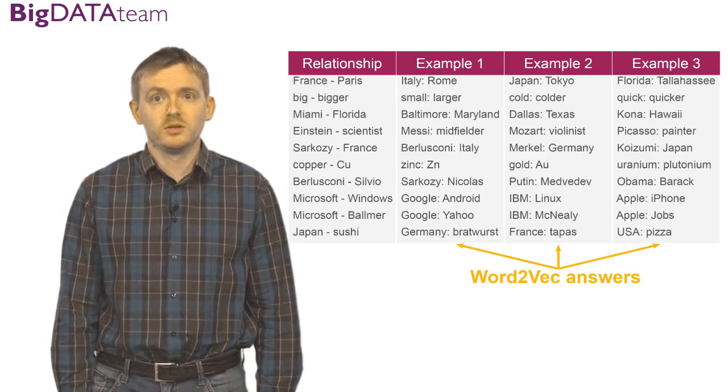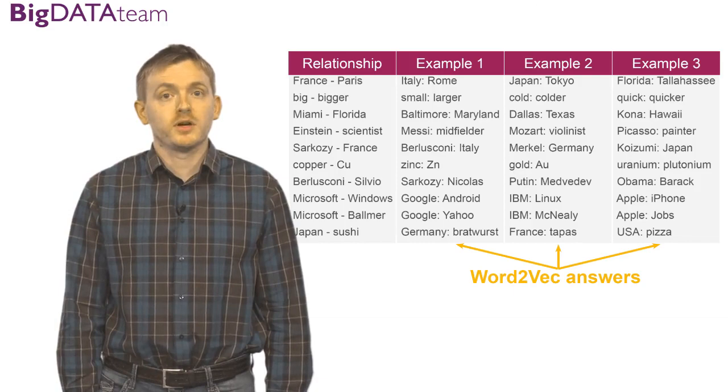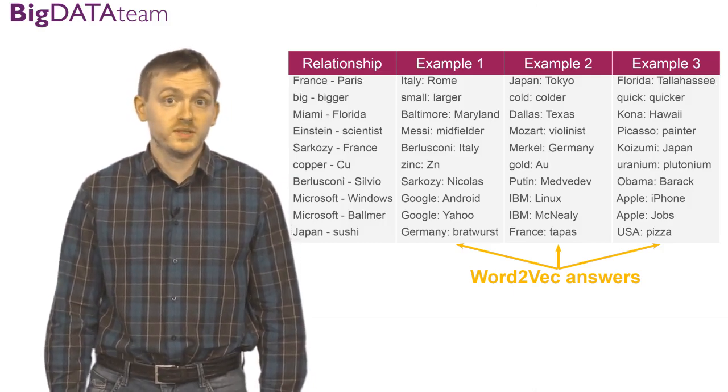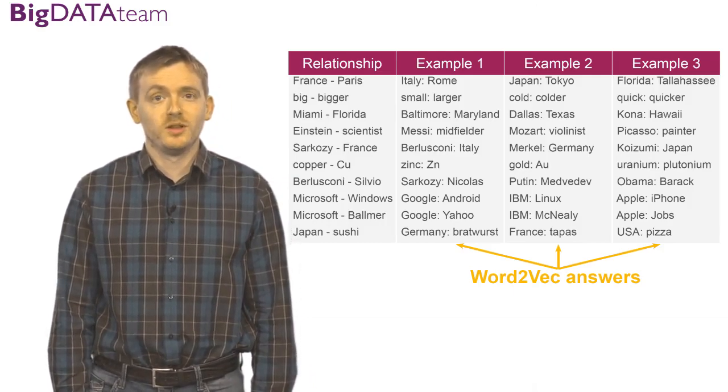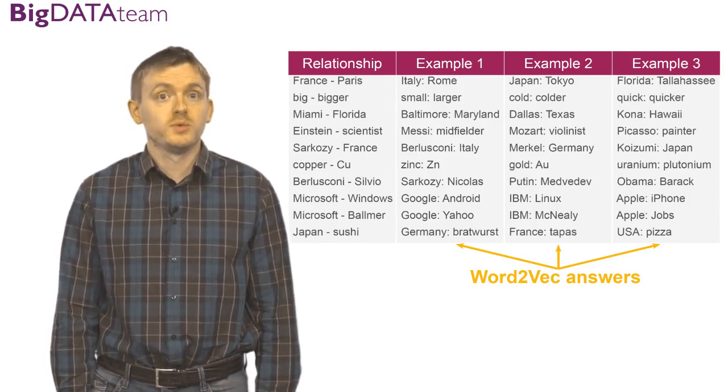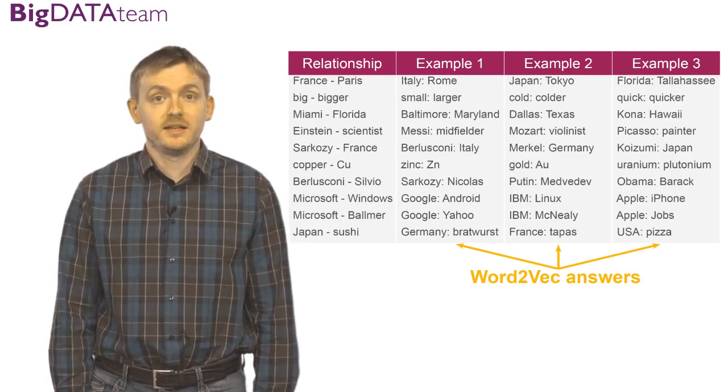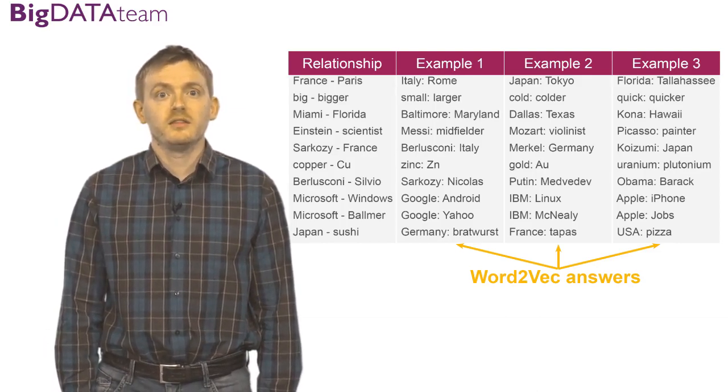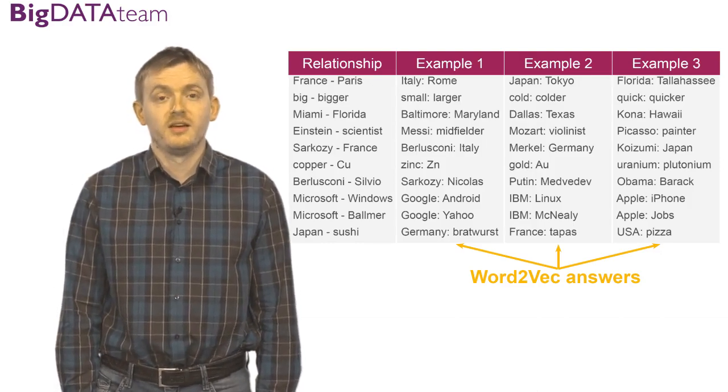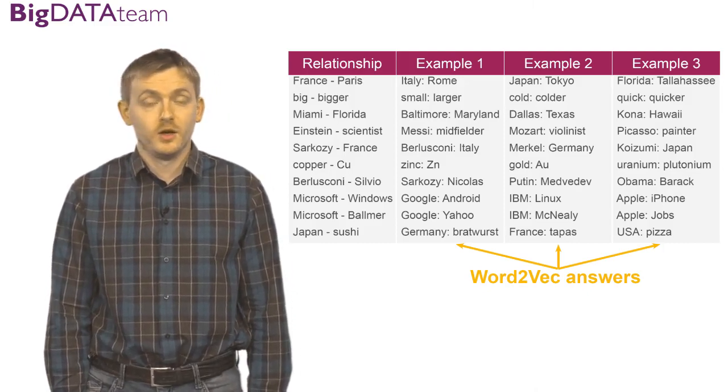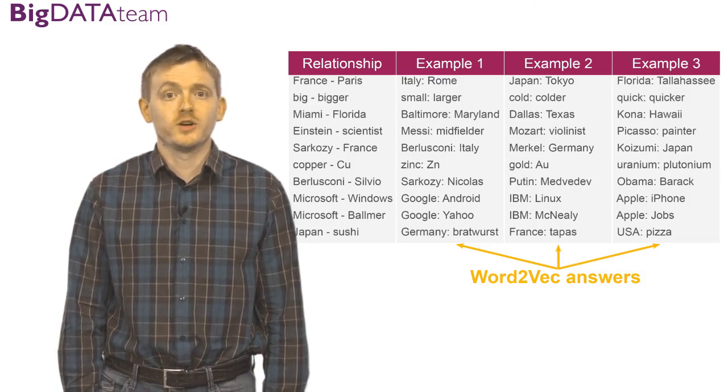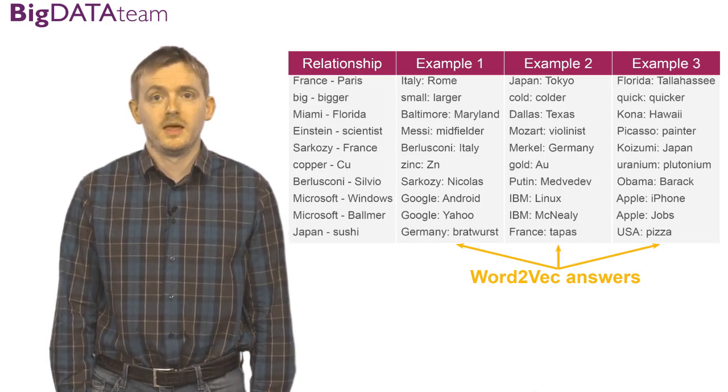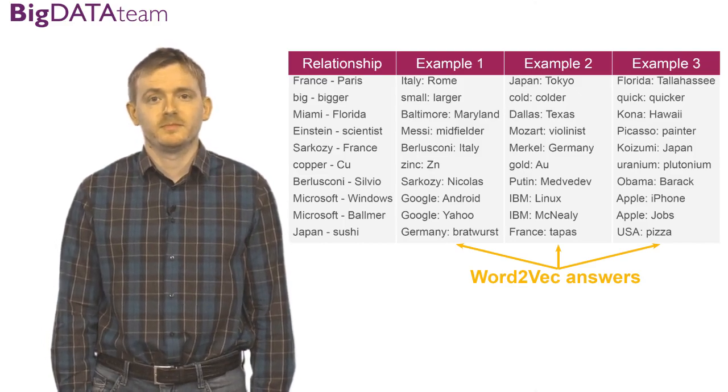So, input here is big, bigger, small. Oops! In this case, Word2Vec model has an incorrect answer—larger should be smaller, of course. But in the second line it is okay: cold, colder, quick, quicker. In the first line there are interesting relationships. It is profession. Einstein is a scientist. Who is Messi? Messi is a midfielder—it's correct. Mozart is a violinist, which I think is close to the truth. And Picasso is a painter.